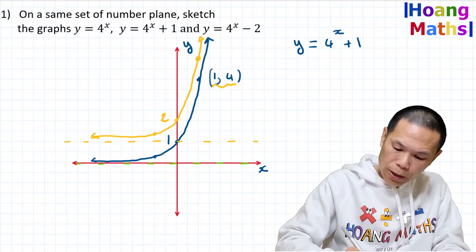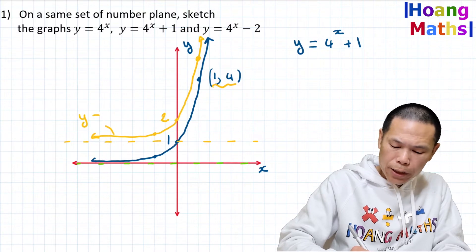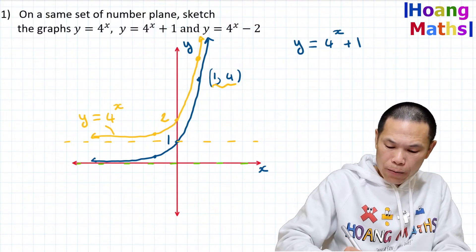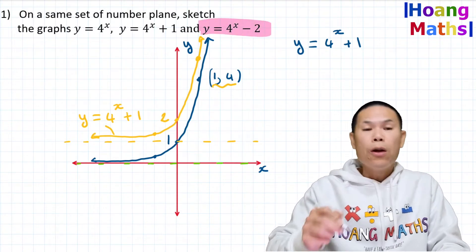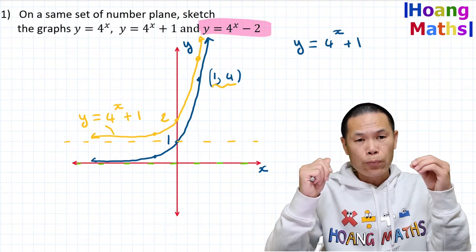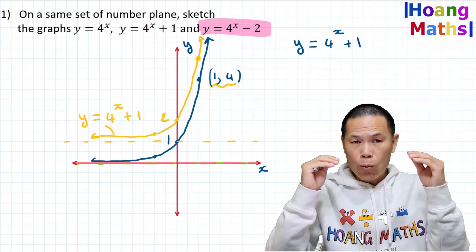So that is y = 4^(x+1). Now let's sketch y = 4^(x-2).